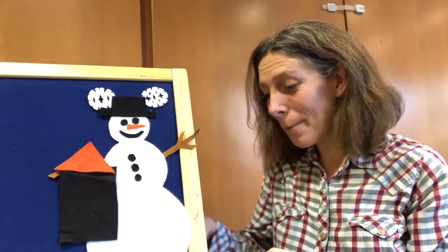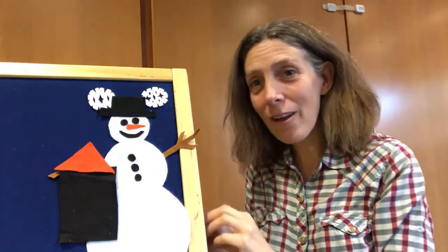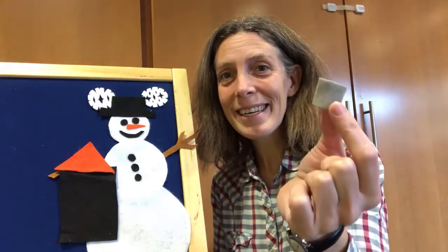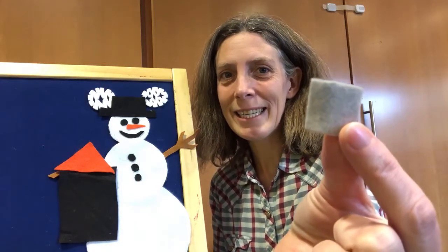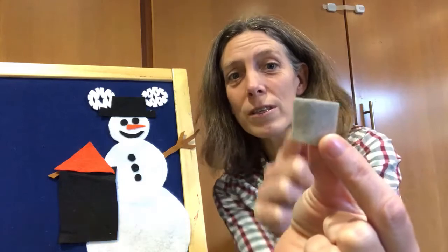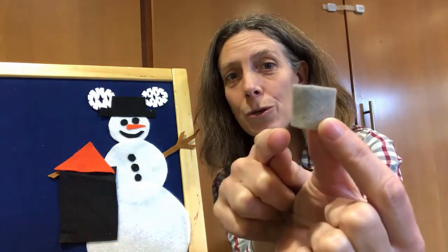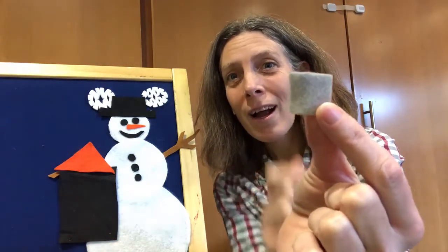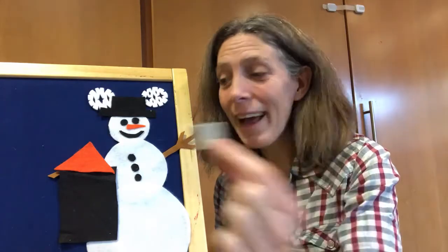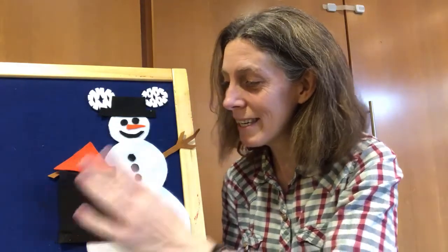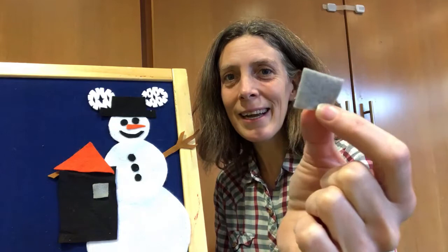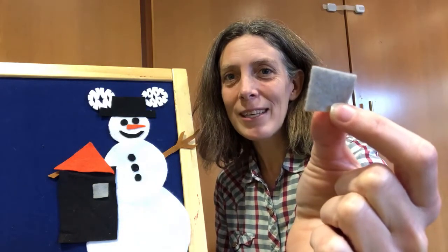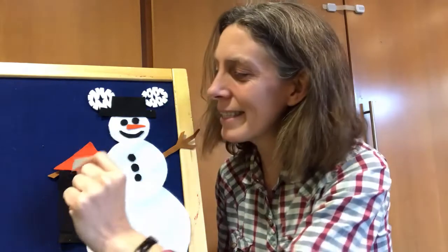Plop, plop, plop. What fell on top? Anybody know what color this is? This is gray. And what shape has four sides that are all the same? One, two, three, four. A gray square — that is what I see. Plop, plop, plop. What fell on top? It's another gray square — that is what I see.